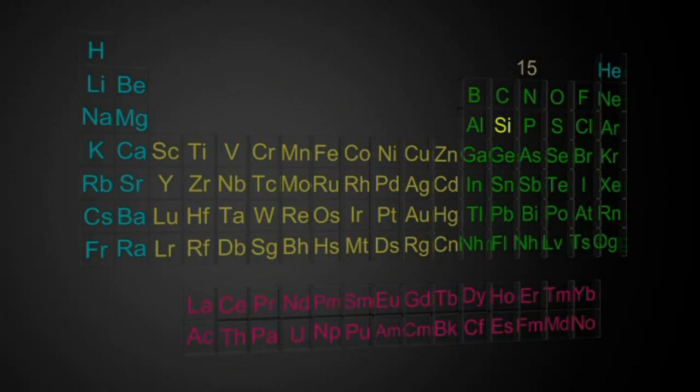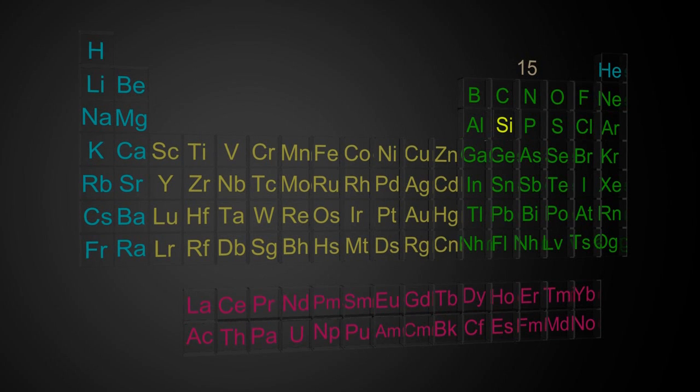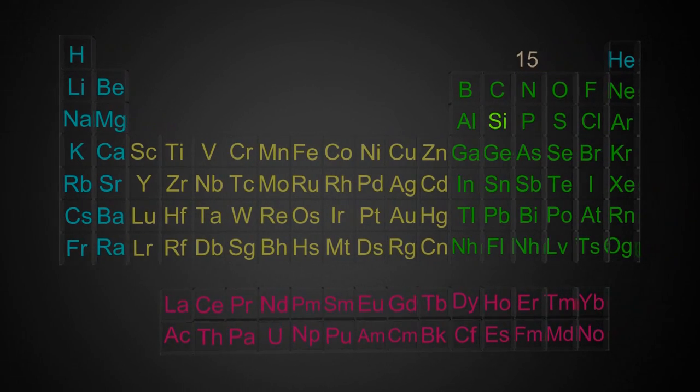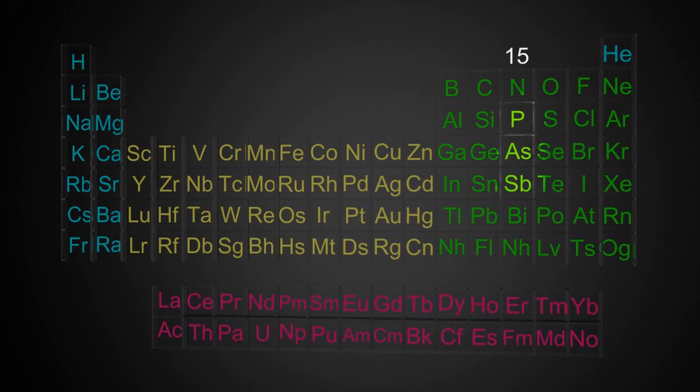So first of all, a quick recap. Simple semiconductors are made just of the element silicon, but in this video we're going to look at what happens if you dope it. Now doping is adding a little bit of another element.